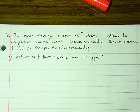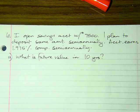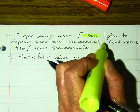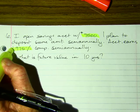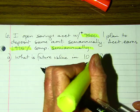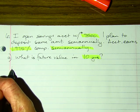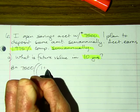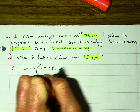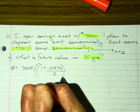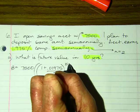This is not a single deposit because I'm depositing that amount twice a year — so this is a periodic deposit. Semi-annually is twice a year, so n = 2. The exponent is 10 years × 2.